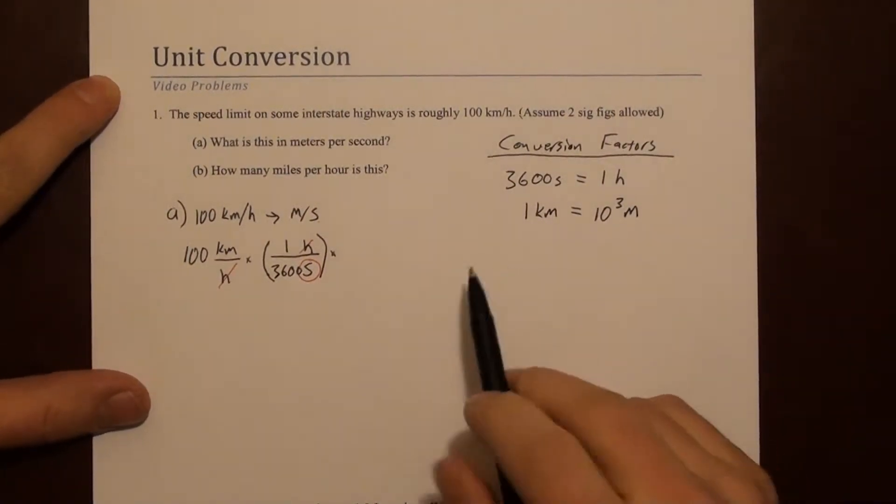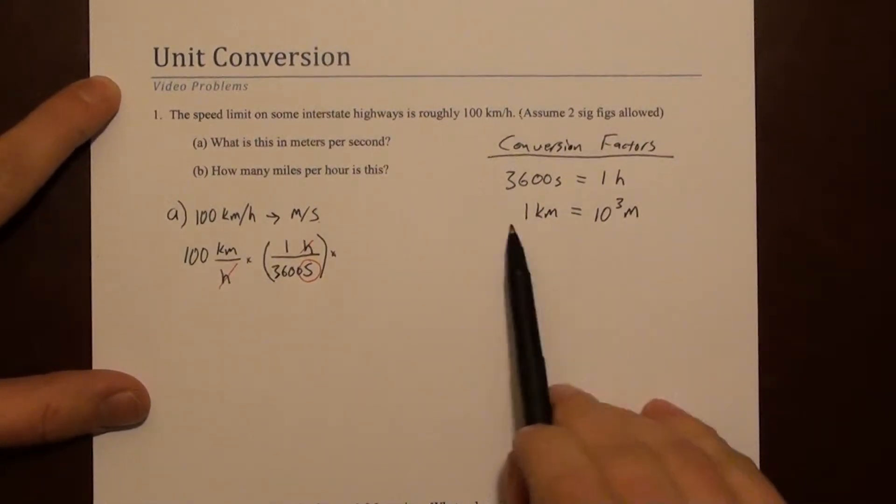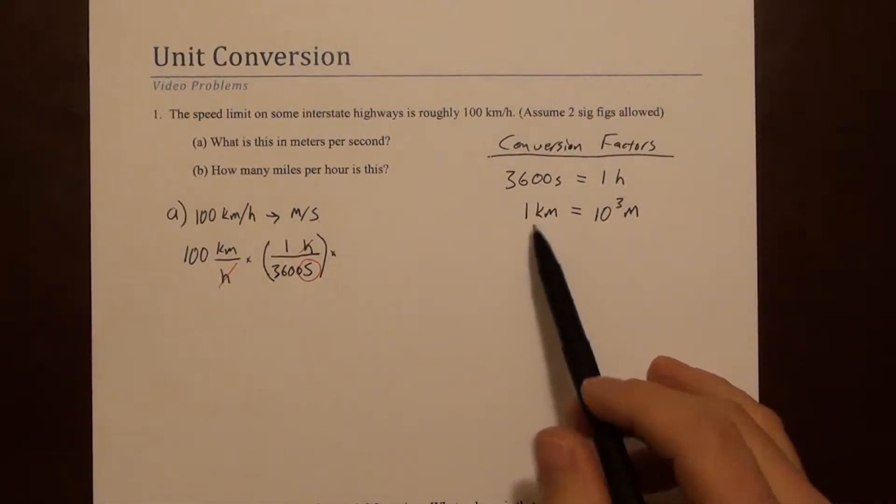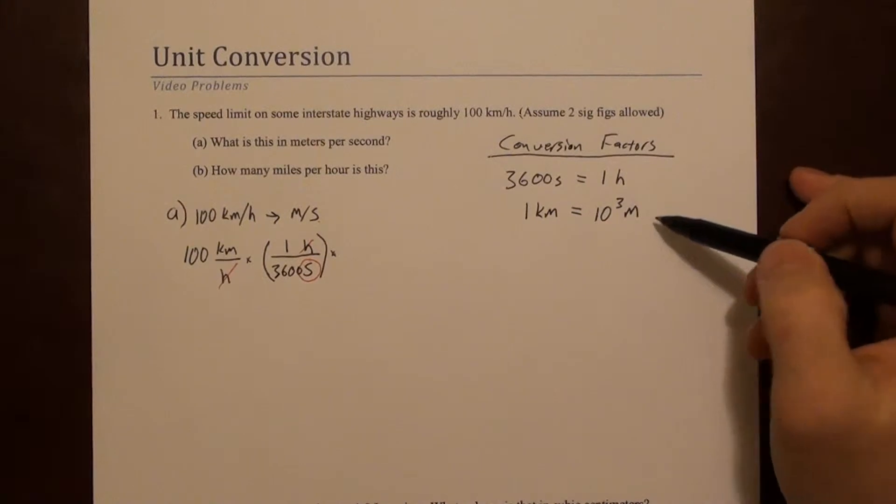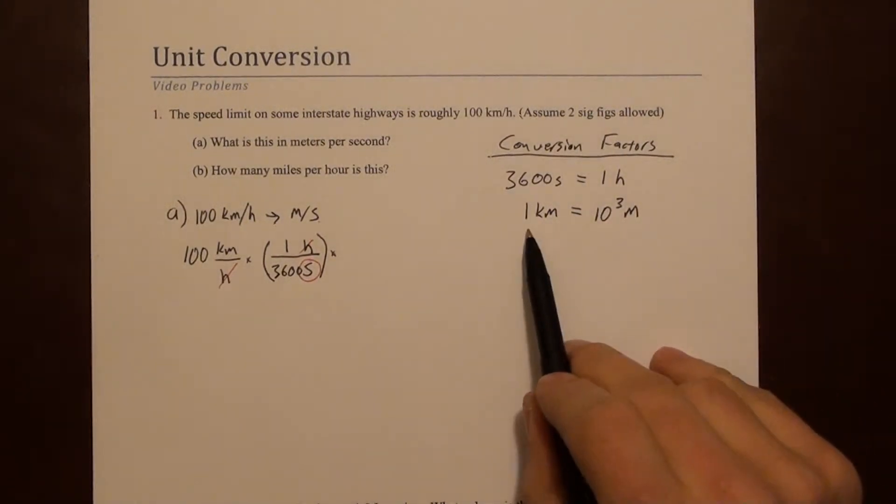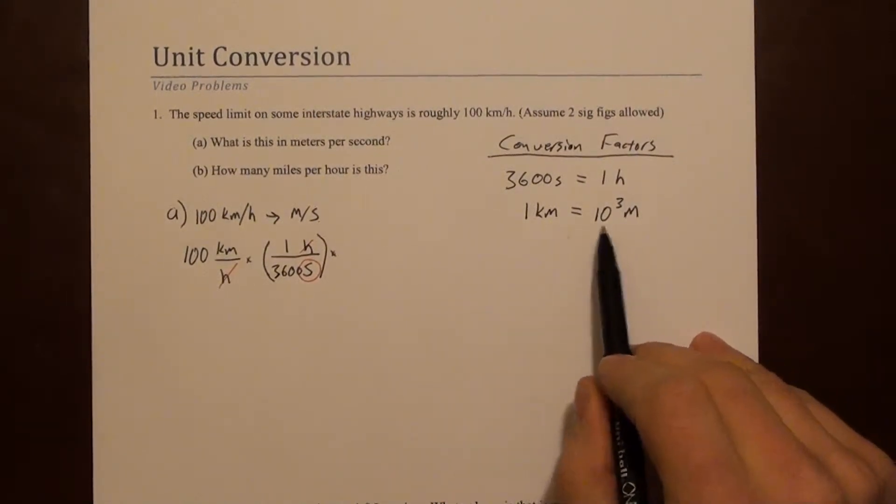It's really easy to confuse where to put the 10 to the 3 when converting in metric prefixes. Maybe it's simple with a kilometer and a meter, but it's more confusing when you think about the less common prefixes. So you should think critically about this. Are there 10 to the 3 meters in a kilometer? Well, yeah. A meter is smaller than a kilometer, so we need a lot of them to make one kilometer.